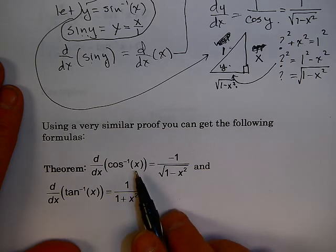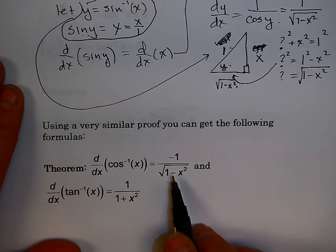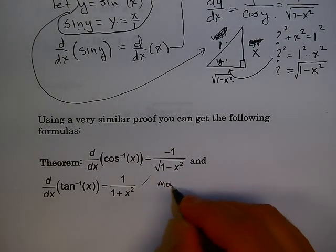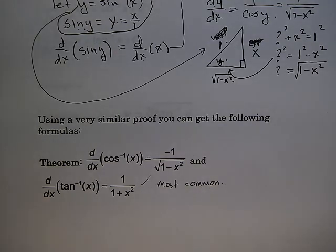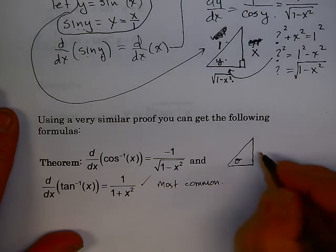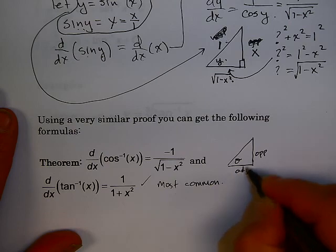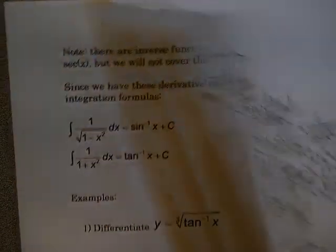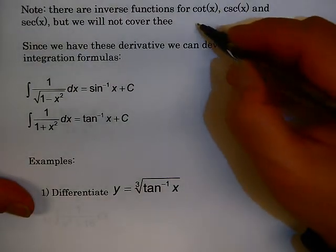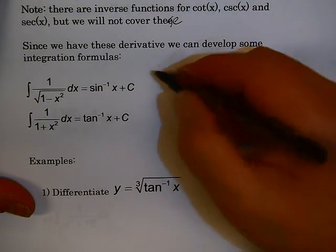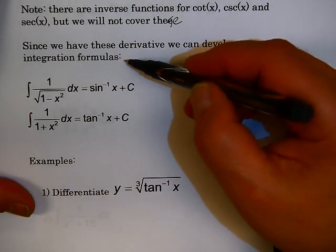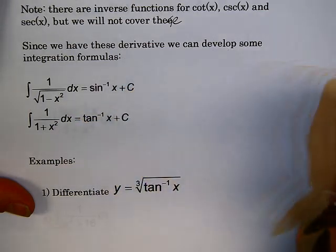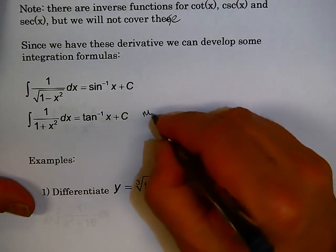By a very similar proof, the derivative of inverse cosine is minus 1 over √(1 − x²) — notice how close this is to inverse sine. And the derivative of inverse tangent is 1 over (1 + x²). Inverse tangent is the most commonly used of these functions. Since we have the derivatives, we can develop integration formulas: the integral of 1 over √(1 − x²) is inverse sine, and the integral of 1 over (1 + x²) is inverse tangent — and again, this last one is the most common.